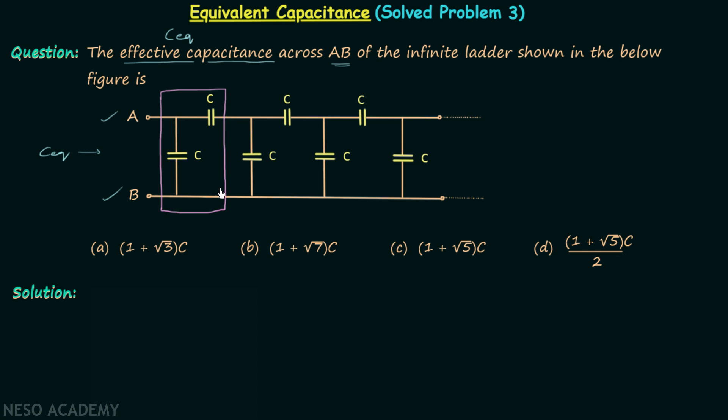Now if I remove this section from the ladder network and calculate the equivalent capacitance between this and this terminal, I will get C equivalent. Why? Because we have infinite times repetition of this particular section, and if we remove one such section from the infinite sections, then the effective capacitance will remain the same. So finally we have C_eq as the capacitance between terminal A and terminal B.